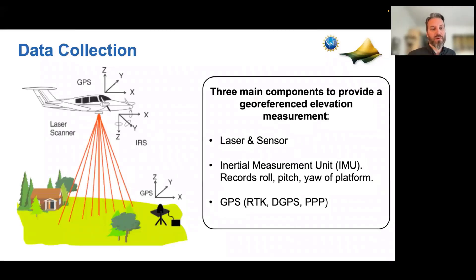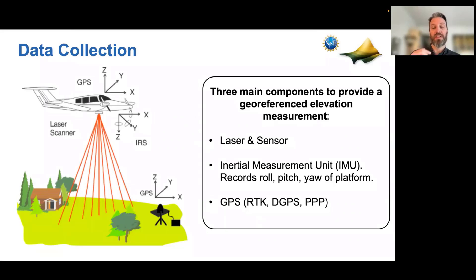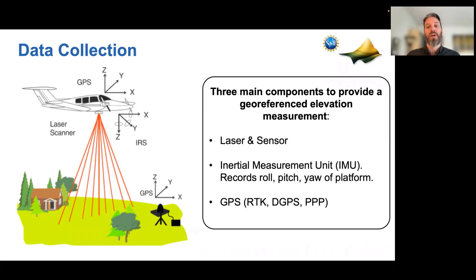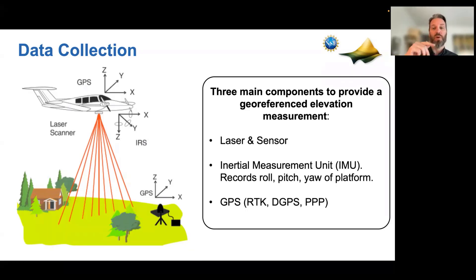An aircraft LIDAR collection has three main components. You have the actual laser and its sensor or detector. You have an IMU, which is an inertial measurement unit, also referred to as an INS (inertial navigation system). And then you have GPS both on the plane and on the ground. All three are critical to accurate collection. For aircraft, the IMU is particularly critical because the aircraft is bouncing around in space, and in order to accurately position the laser in 3D space, the IMU uses gyroscopes to accurately record where the laser is and where it's pointing.